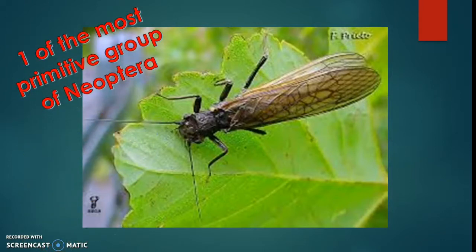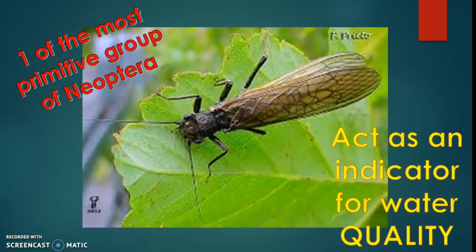Stoneflies are one of the most primitive groups of Neoptera. The egg is an indicator for water quality, so if you see their presence in a stream or in the water, it usually indicates that the water is of good quality.